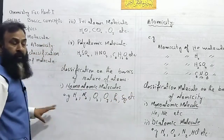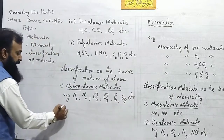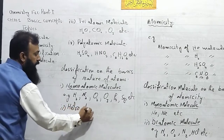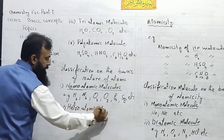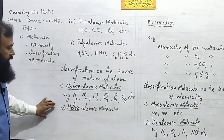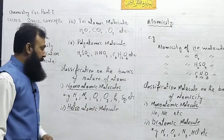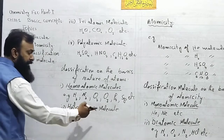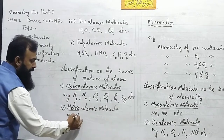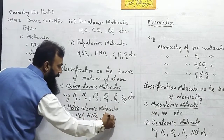These molecules all consist of the same kind of atoms. The second type is heteroatomic molecules. 'Hetero' means different — molecules in which different atoms combine to form a molecule. We define it as: the molecule which consists of different kinds of atoms. For example: HCl, HNO₃, H₂SO₄, etc.